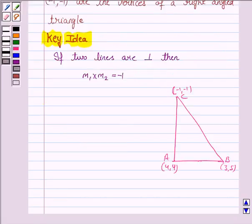Let us now proceed with the solution. We have to prove that these three are the vertices of a right triangle. The given points are A(4,4), B(3,5), and C(-1,-1). Now, to prove these three are the vertices of a right triangle, we need to prove that AC is perpendicular to AB.